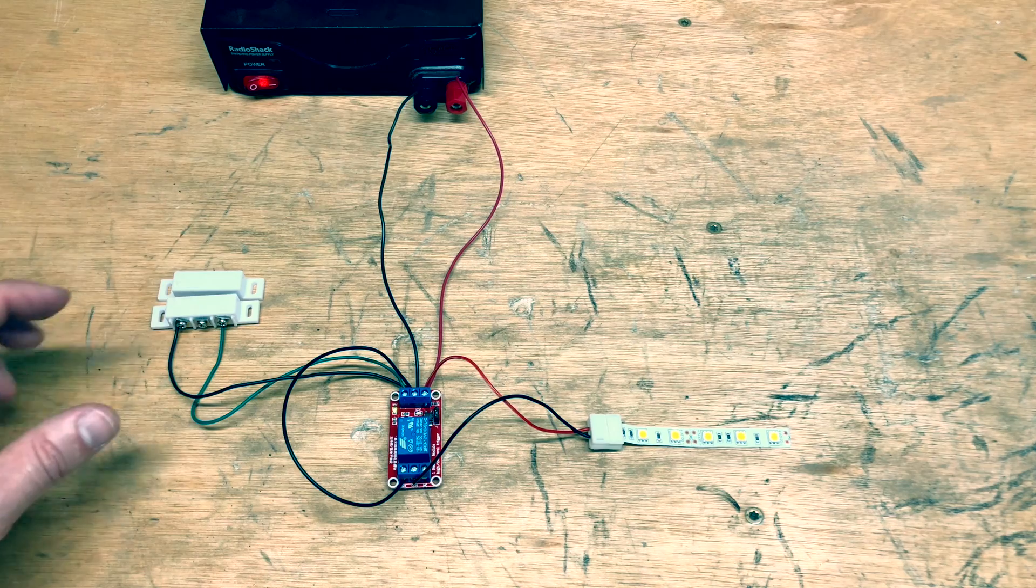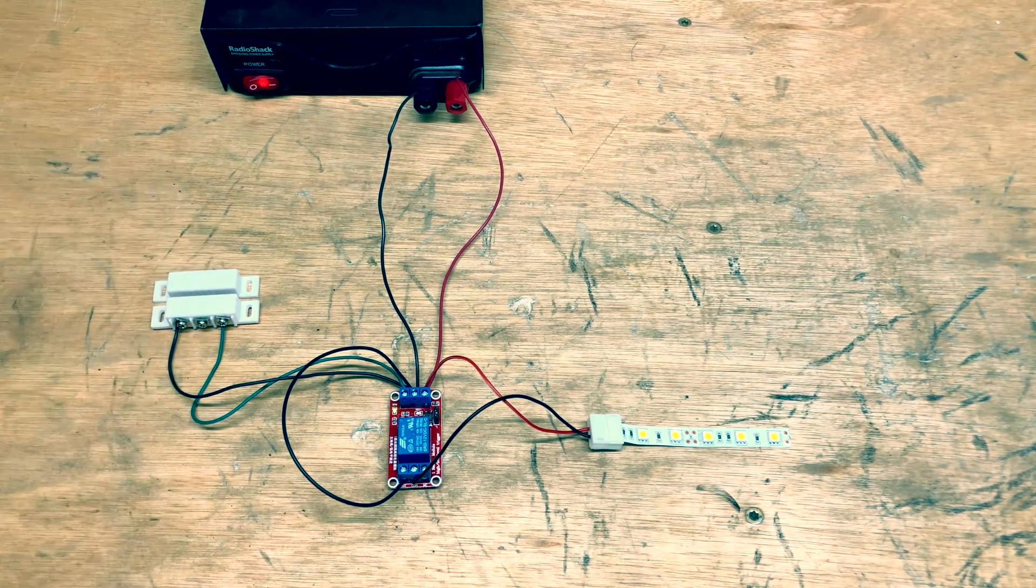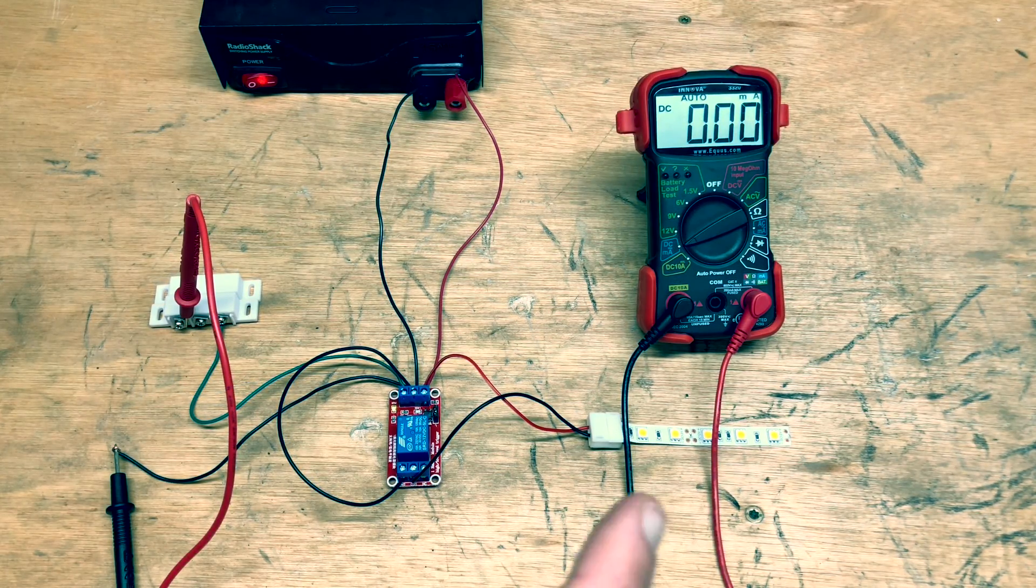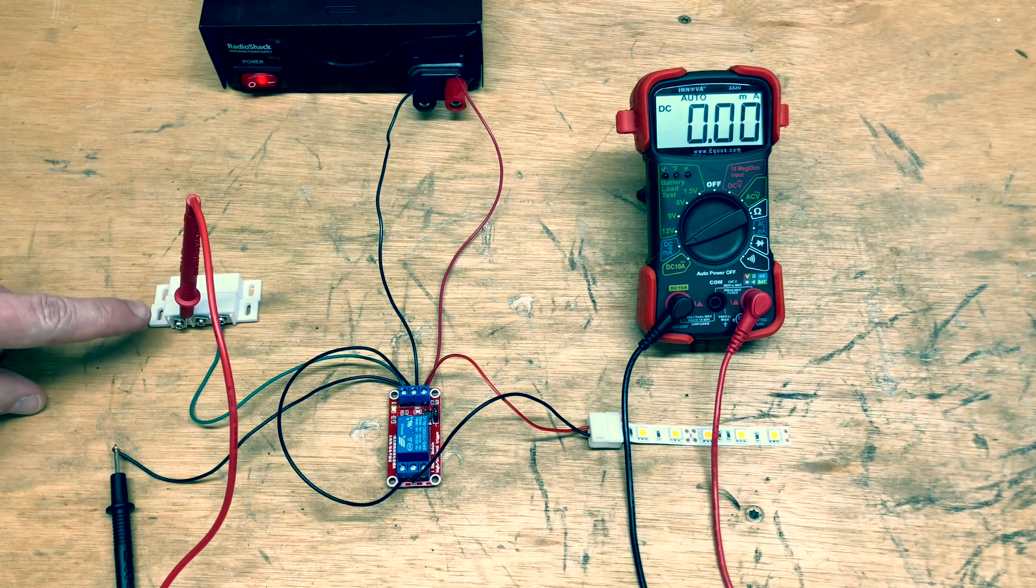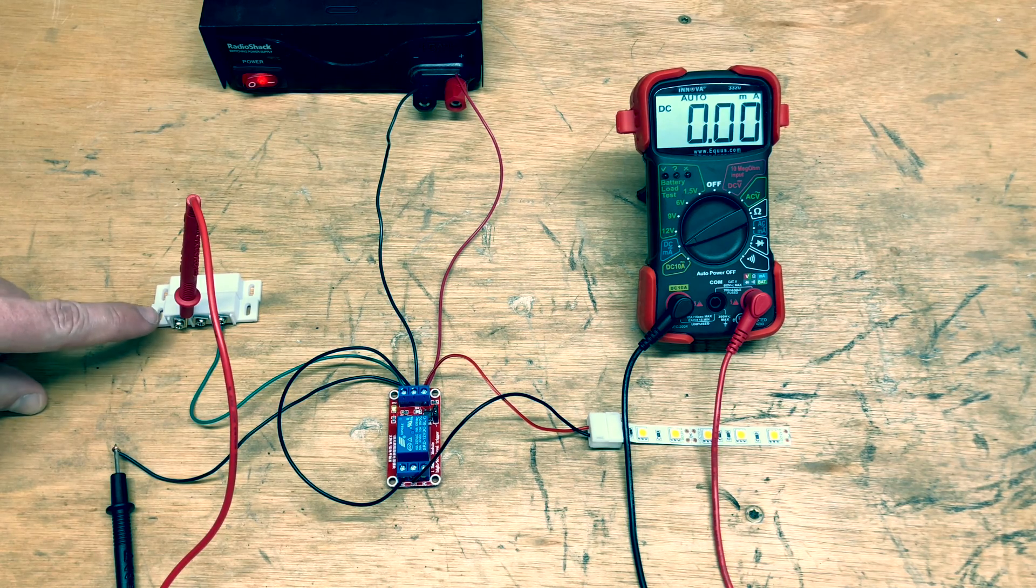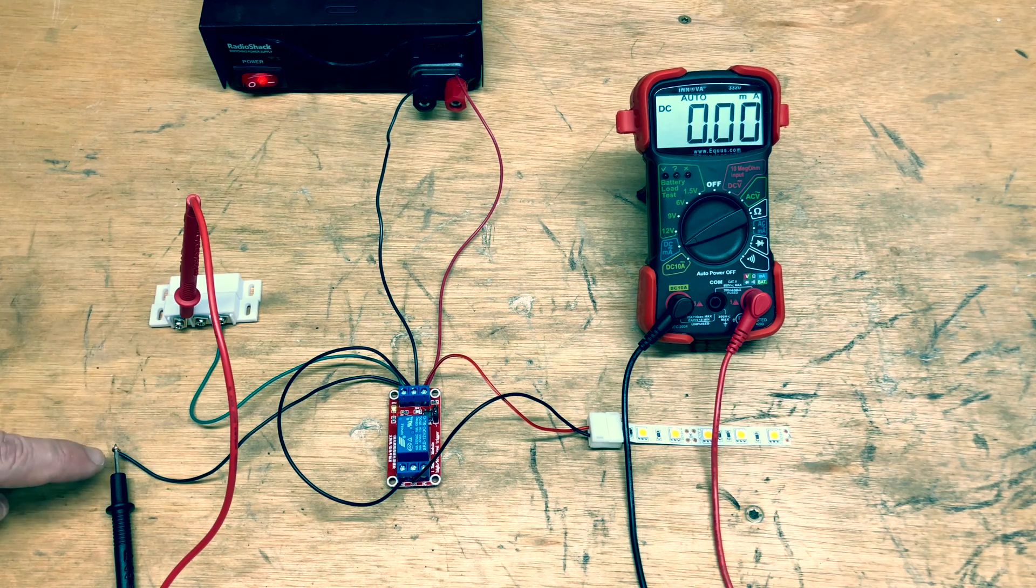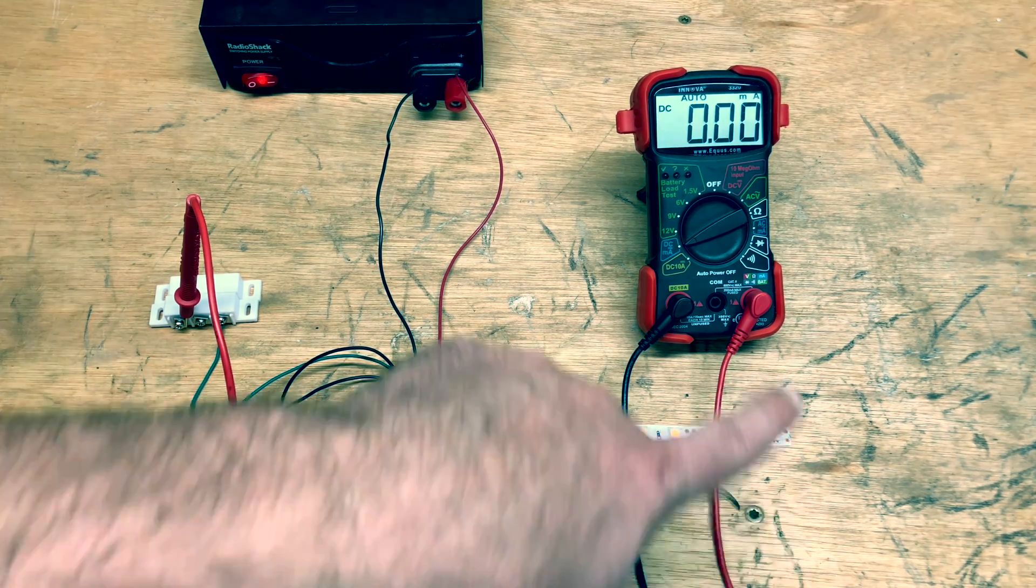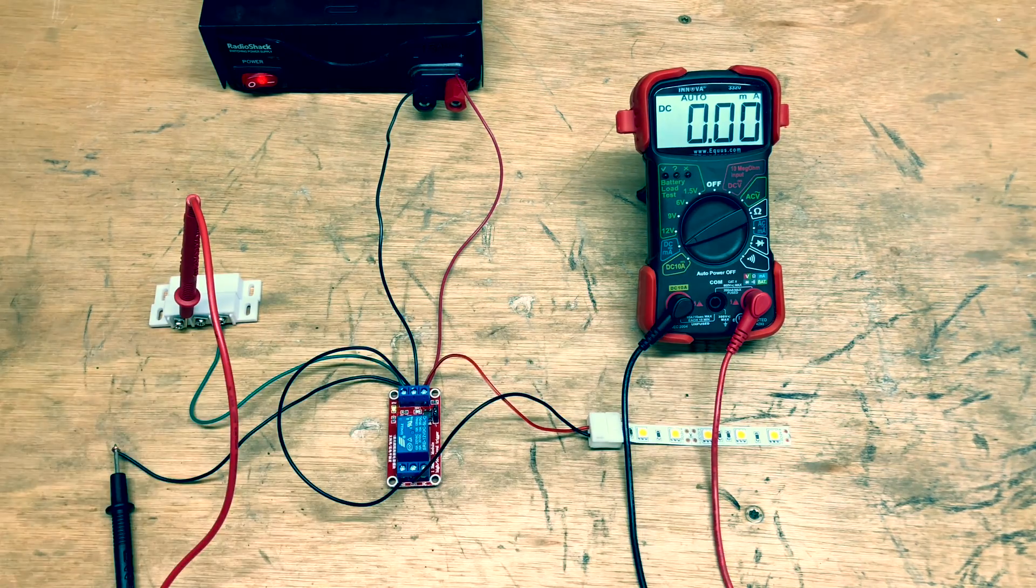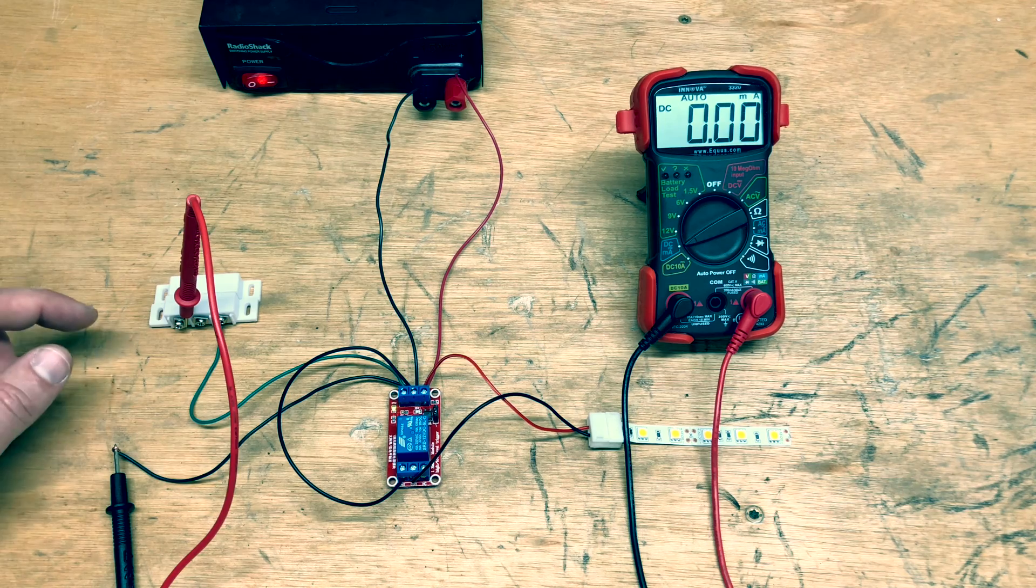Now let's look at some of the current measurements to just make sure there's not much power running through this. Now we've got the multimeter hooked up. To hook it up, all we did is remove the black wire from the COM terminal on the reed switch, hooked it up to the probe on the multimeter, runs to the multimeter, back out the red, and then the red is hooked up to the COM port. So we just intercepted that little connection right there.